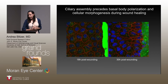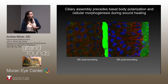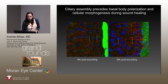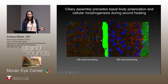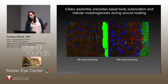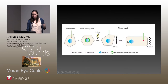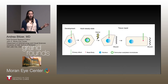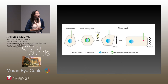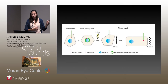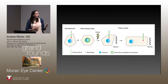Looking at different time points after wounding: at 18 hours and 30 hours post-wound, the cells near the wound have cilia. But at 18 hours those cilia appear to be in the center of the cell, whereas at 30 hours they have migrated — these cilia have moved towards the wound. This leads to our model: during development, cilia are required to make the proper organization of the adult cornea endothelium, and once that's done the cilia regress. But cells maintain the ability to reform a cilium. If there's an injury, they regrow a cilium, which orients toward the wound and instructs the cell where to migrate in order to fix the endothelium.